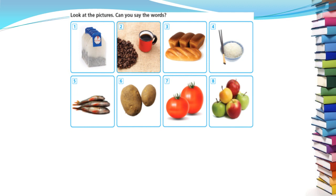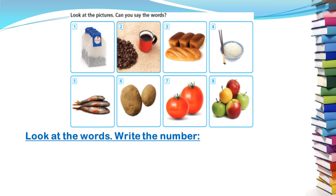So the first picture that I have given you is like this. In the question they say, look at the pictures, can you say the words? Here you are going to write the number of each picture. For example, I give you the alphabets and also the word. So A, I give you potato. Then you have to give me which number is it? So potato, the number of potato is six.